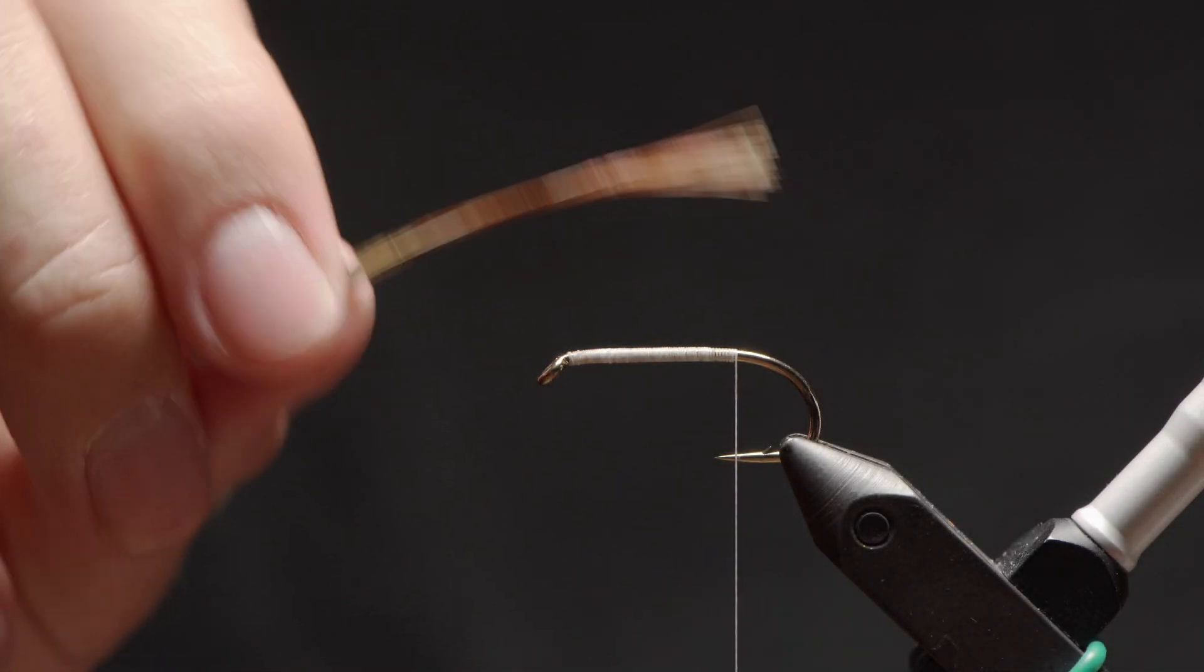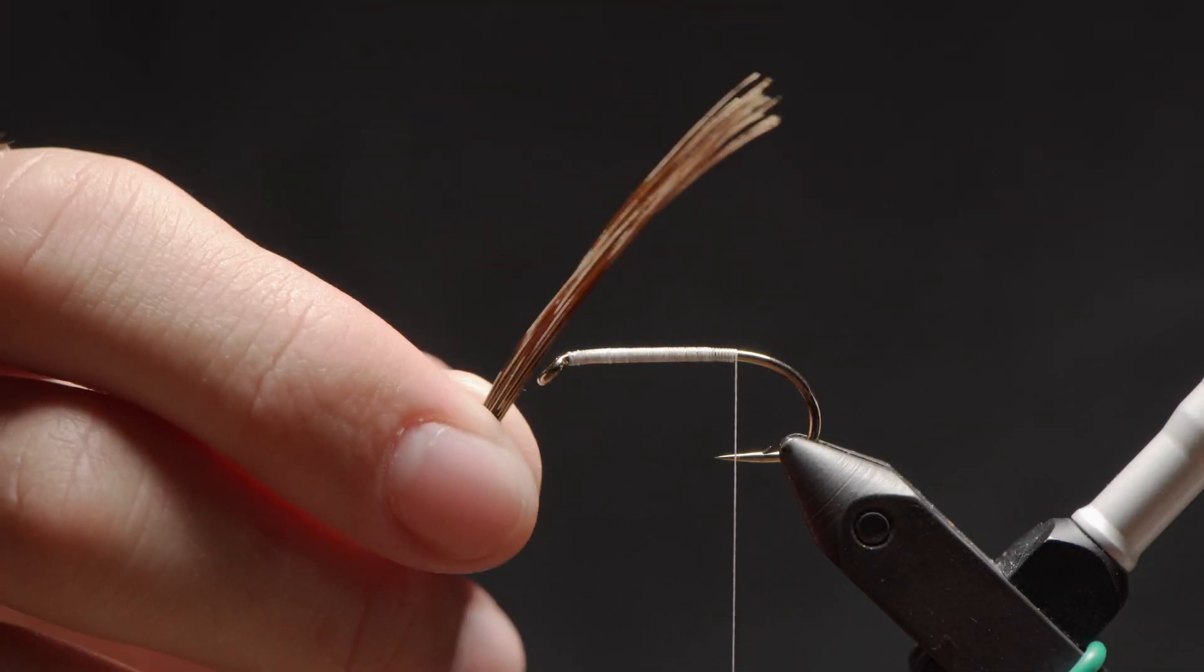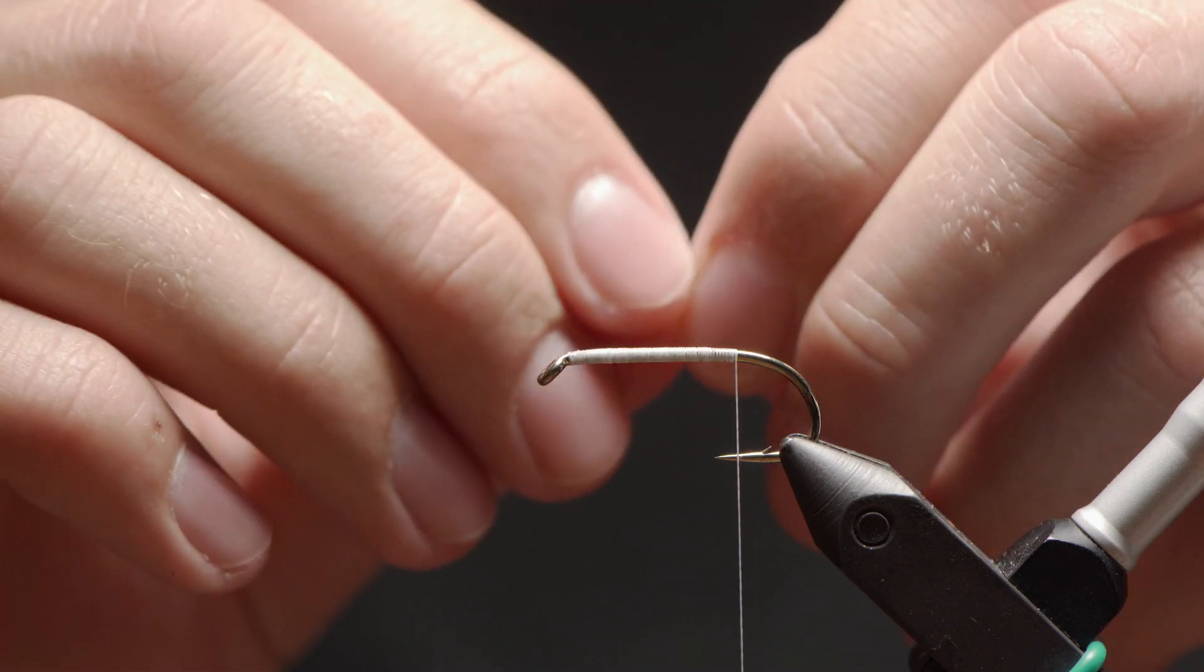Now the pinch wrap is used when you want to secure almost any material. In this case we have some pheasant tail that we're going to tie in for the tail of this fly.